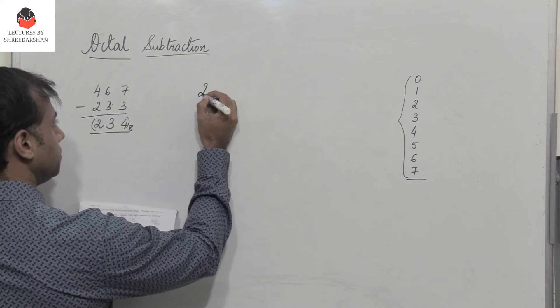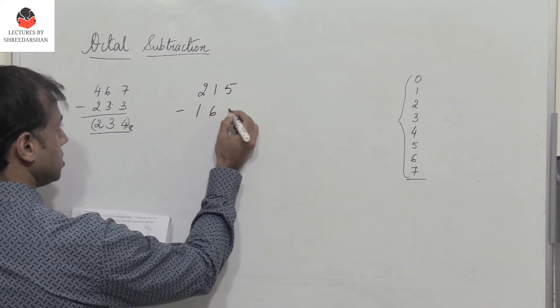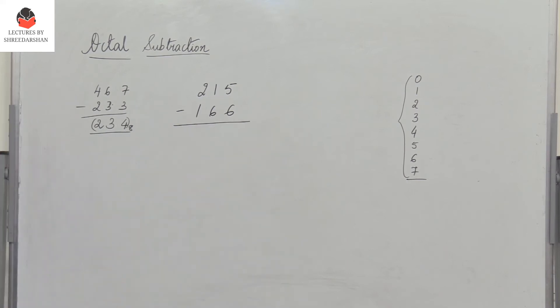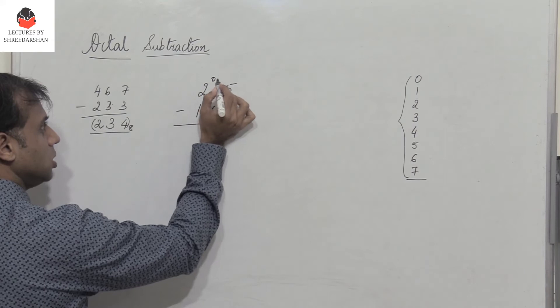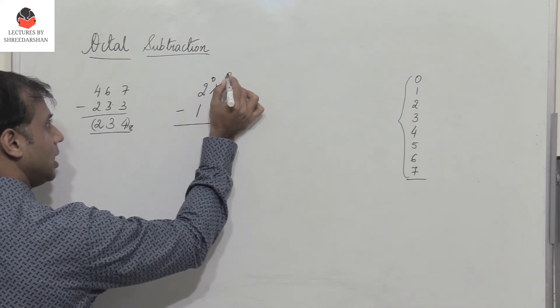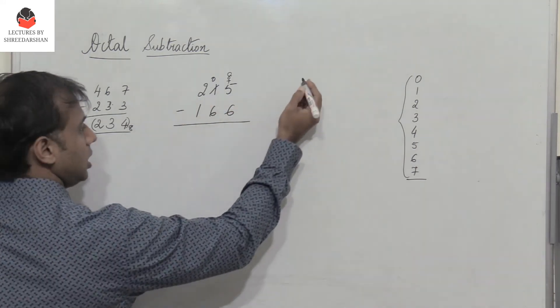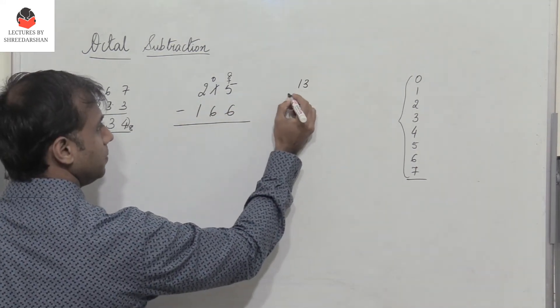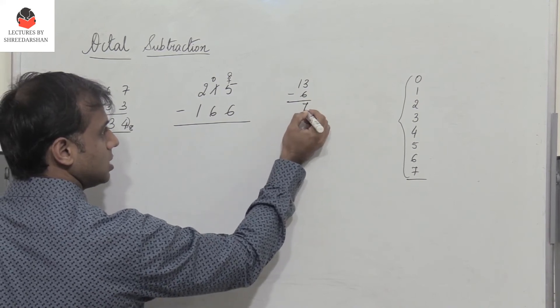Let's take another example. I have 215 minus 166. So now what happens? I need to take a borrow here. So this becomes 0. So when I take a borrow, I add 8 to this number 5. So what is 8 plus 5 is 13 minus 6. So 13 minus 6 would give me 7. So the answer is 7.